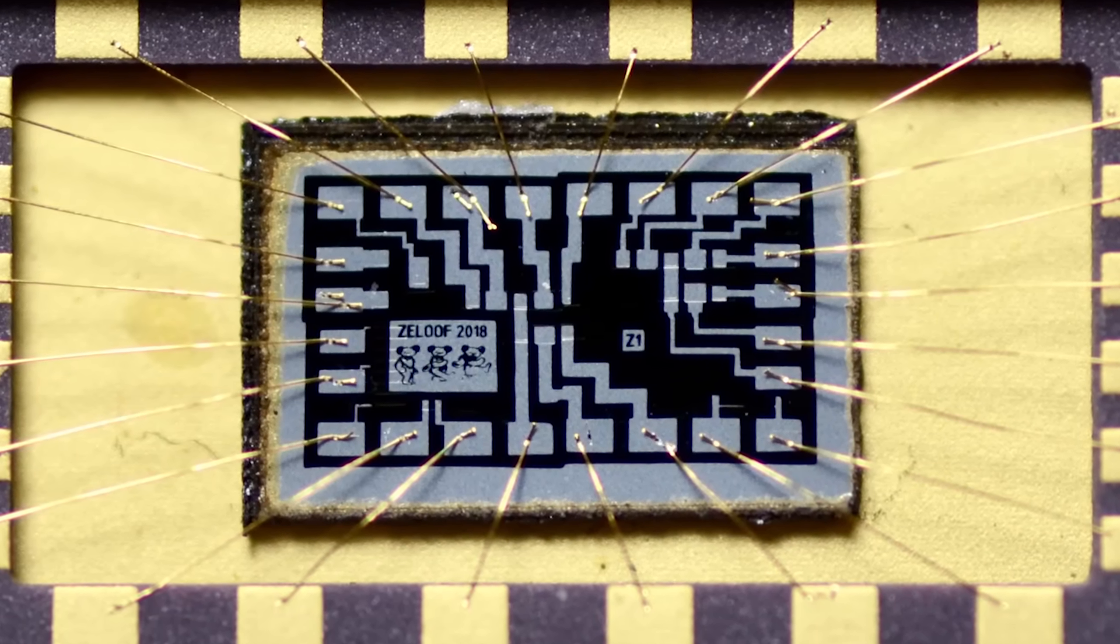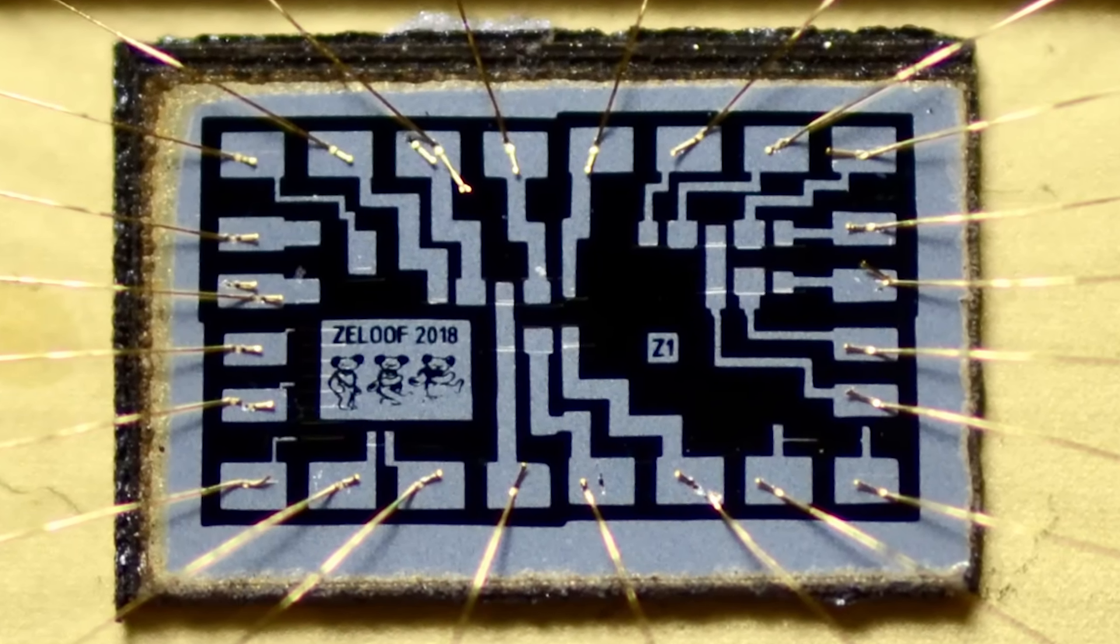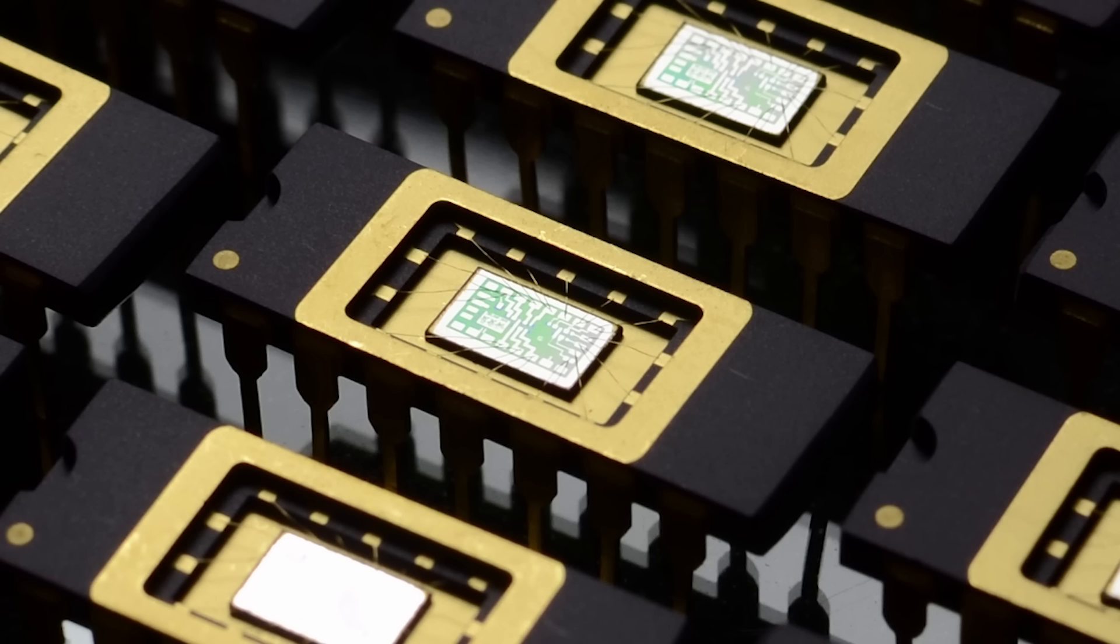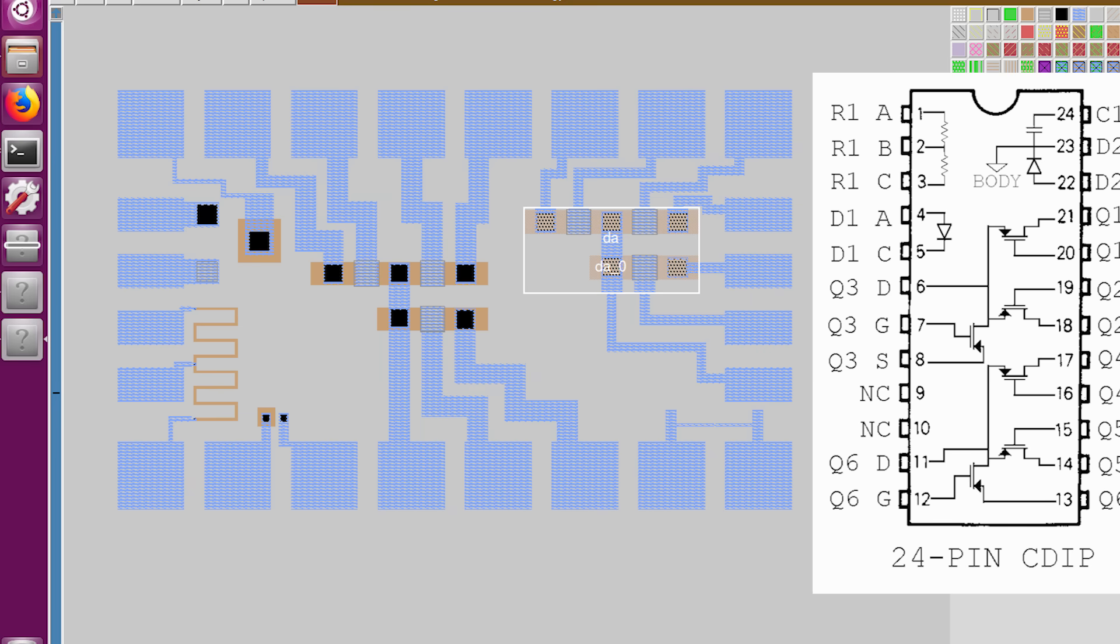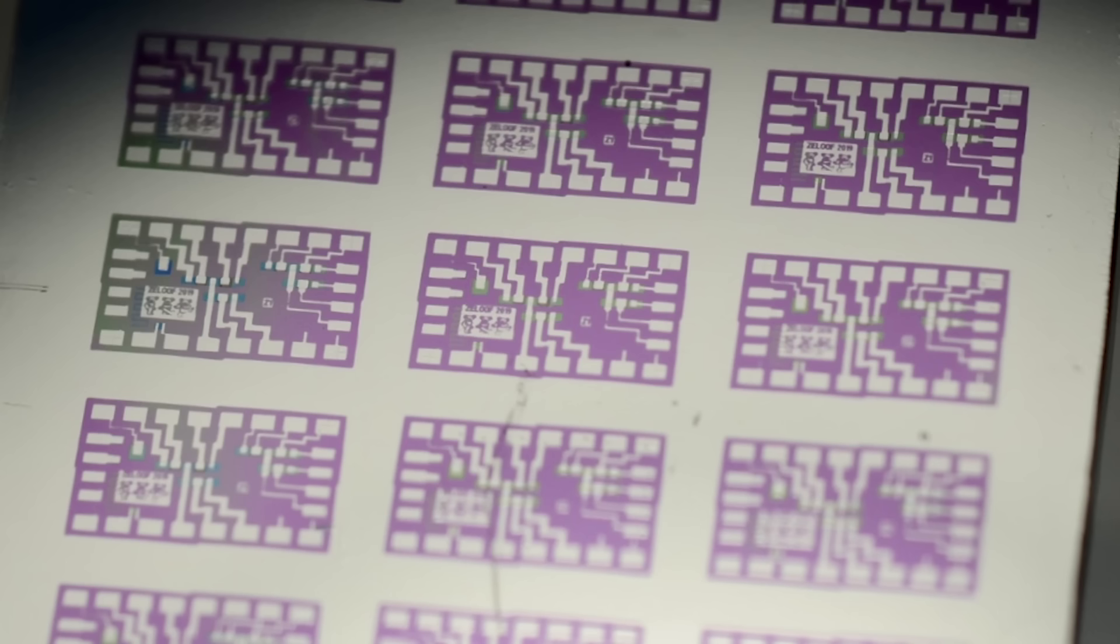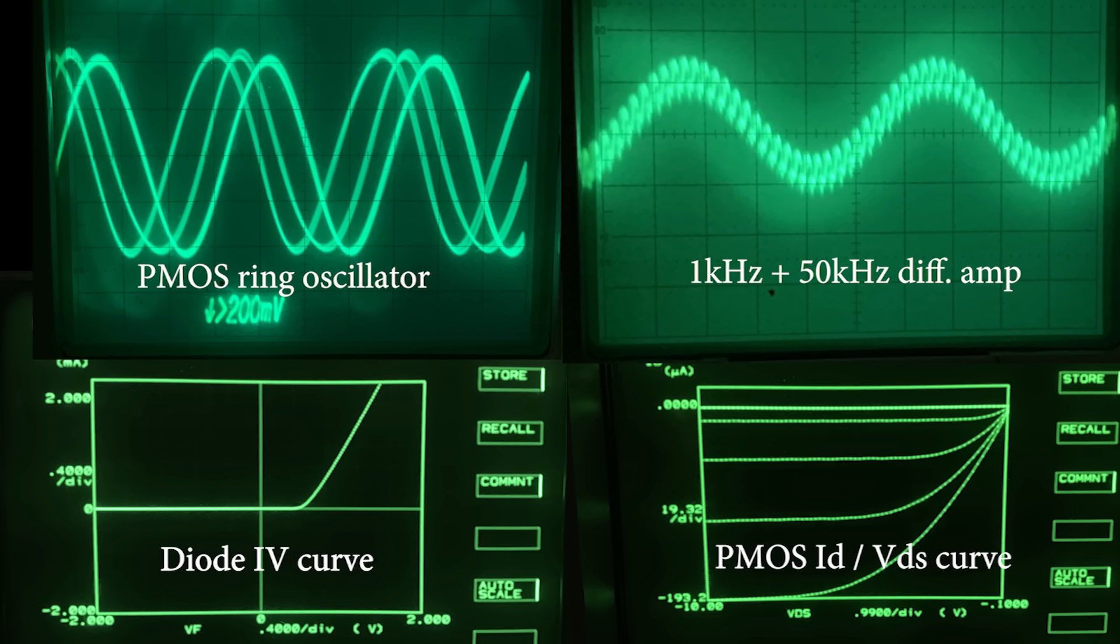The chips I've made are a simple differential amplifier containing six transistors on a 5 micron metal gate PMOS process, which is straight out of the early 1970s. It took me about two years to achieve this, but those specs can be improved on quite a lot.